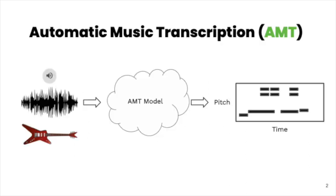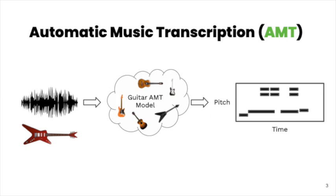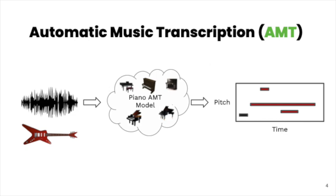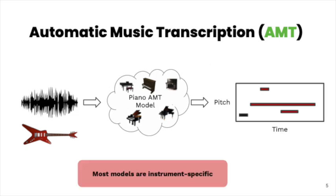This work falls in the realm of automatic music transcription. Automatic music transcription is the task of converting an audio recording into a higher level representation of pitch events over time. Because this task is difficult in general, in order to make progress on this topic, we often design models under more limited conditions. As a result, the majority of AMT models are instrument specific — designed to perform well for a specific instrument such as the guitar. This assumption naturally breaks down if we try to apply an AMT model built for a particular instrument to a recording of a different instrument.